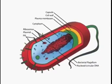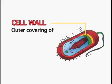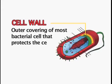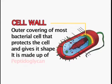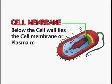Let us now study the various parts of this unicellular organism. They consist of an outer wall, as you can see in the diagram, which is known as the cell wall. The cell wall in them is made up of peptidoglycan. This peptidoglycan is unique to bacteria only and is not found in plants, which also have a cell wall but not made up of peptidoglycan. Below the cell wall lies the cell membrane or plasma membrane. The cell wall protects the cell and also gives it its shape.